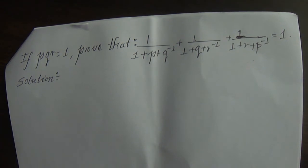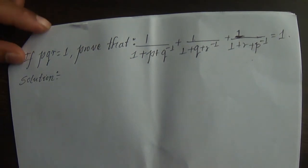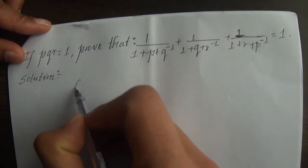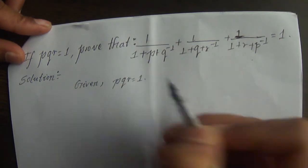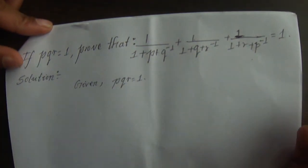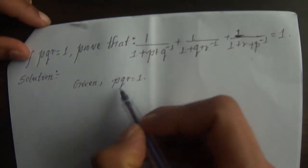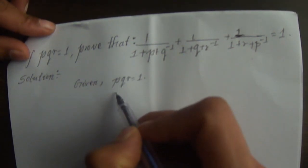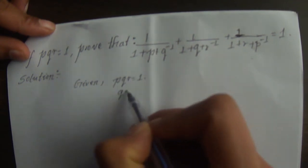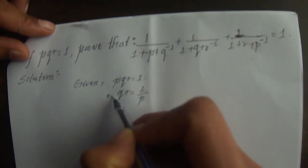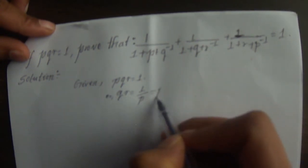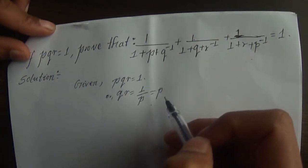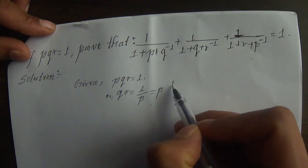This is not an important question. Given that PQR is equal to 1, this is not an important question. PQR is equal to 1 by P. This is P is equal to 1 by P. This is P inverse.